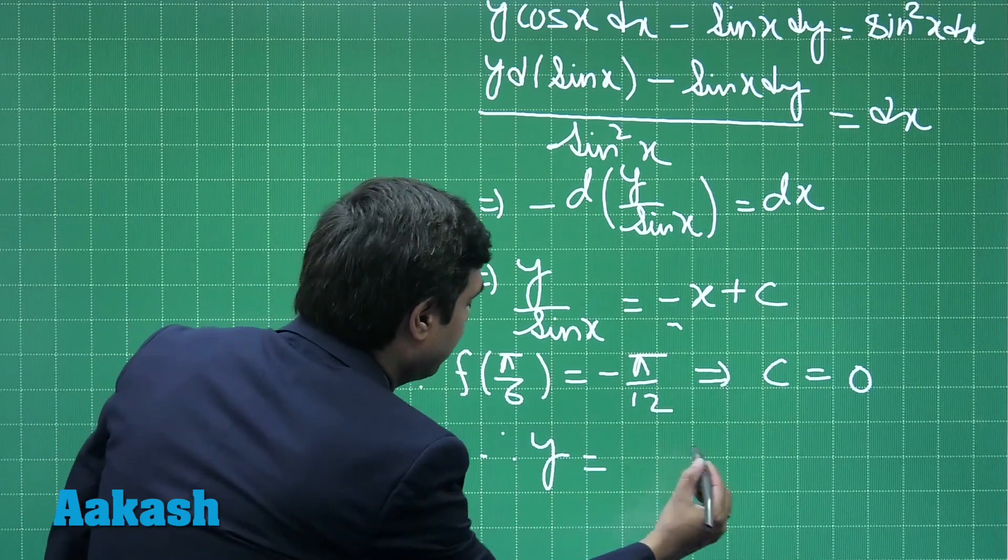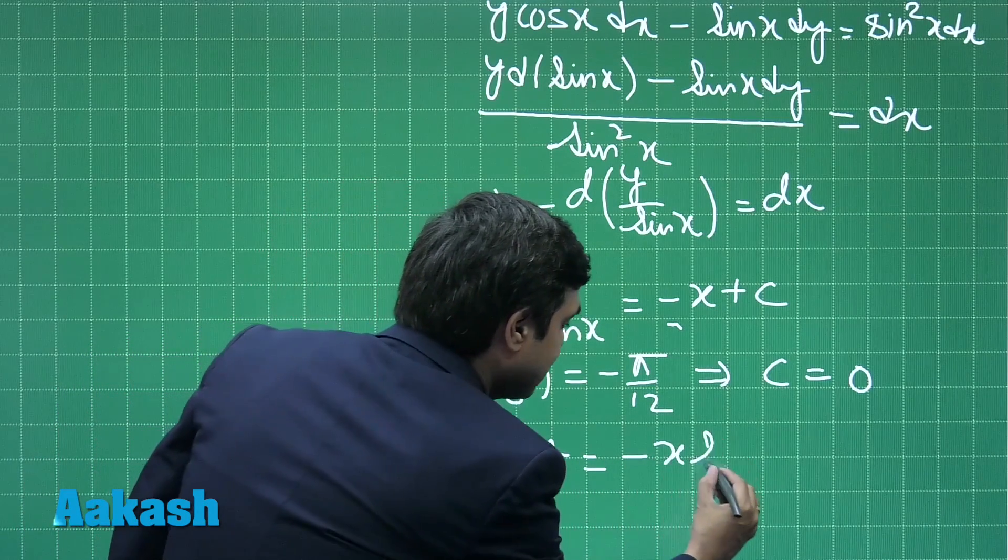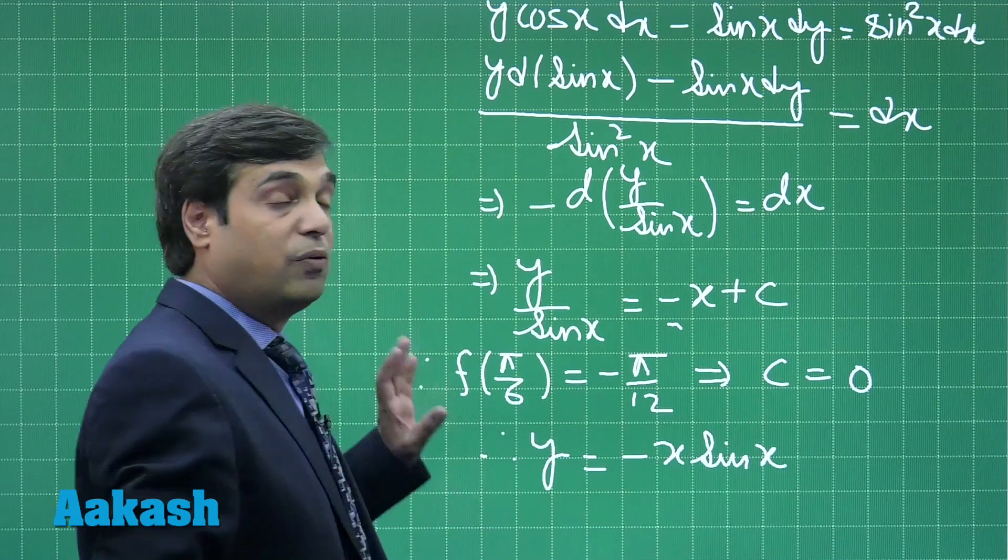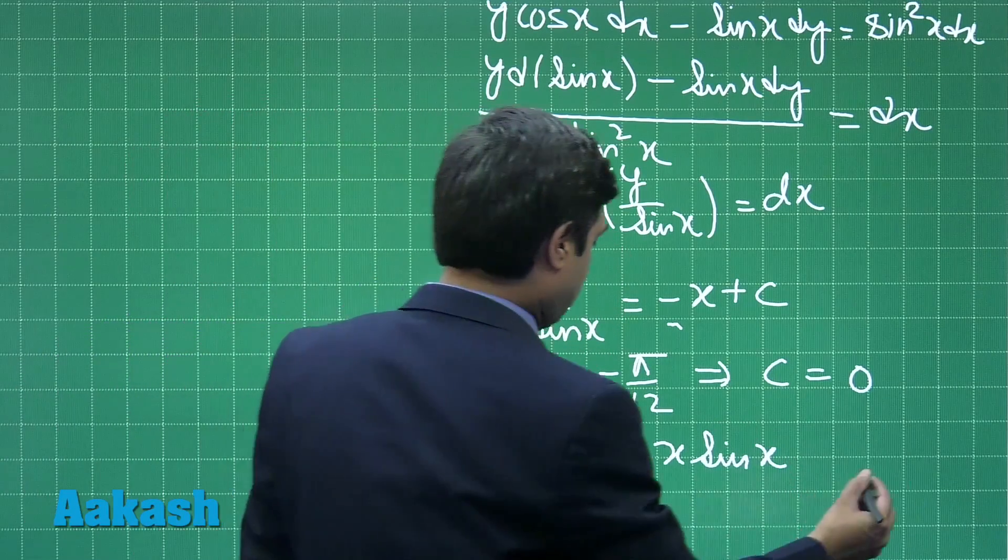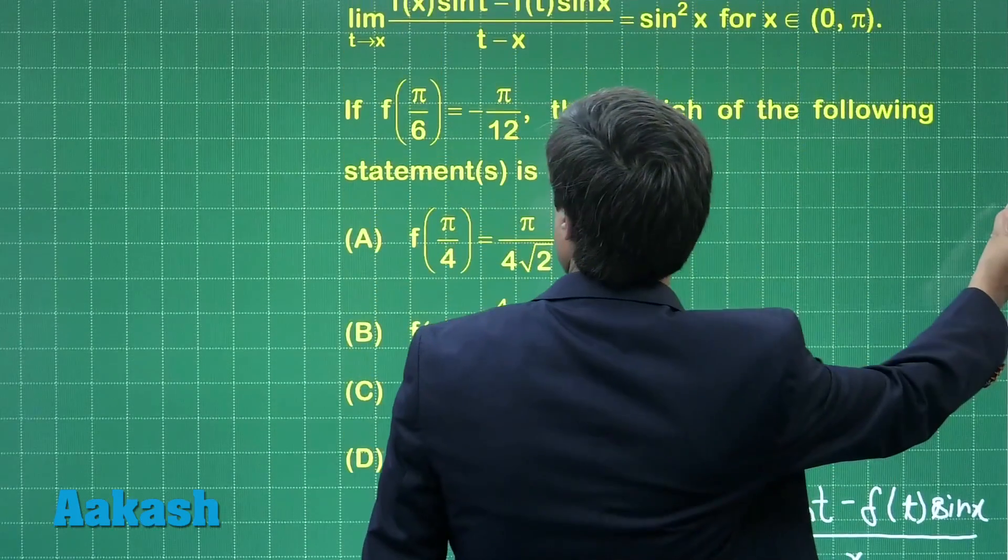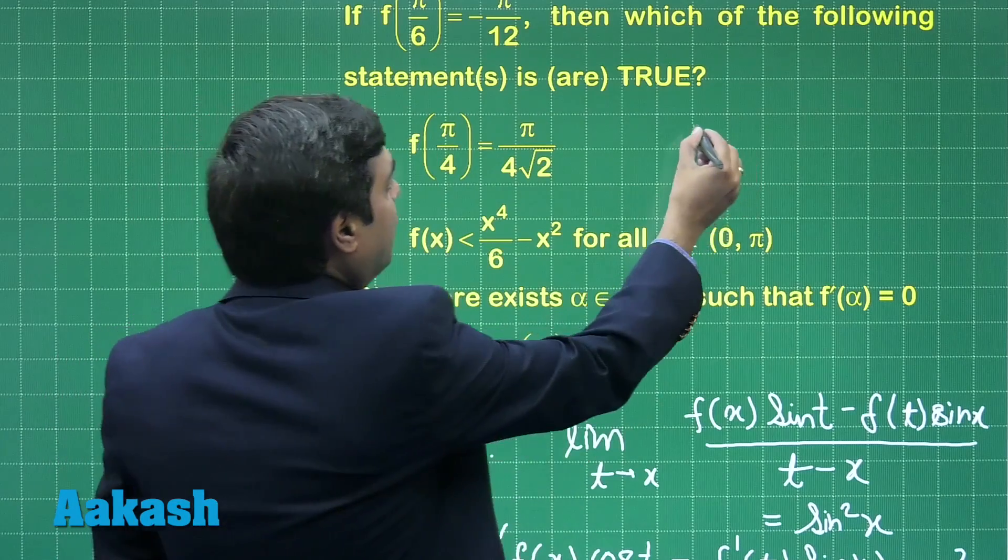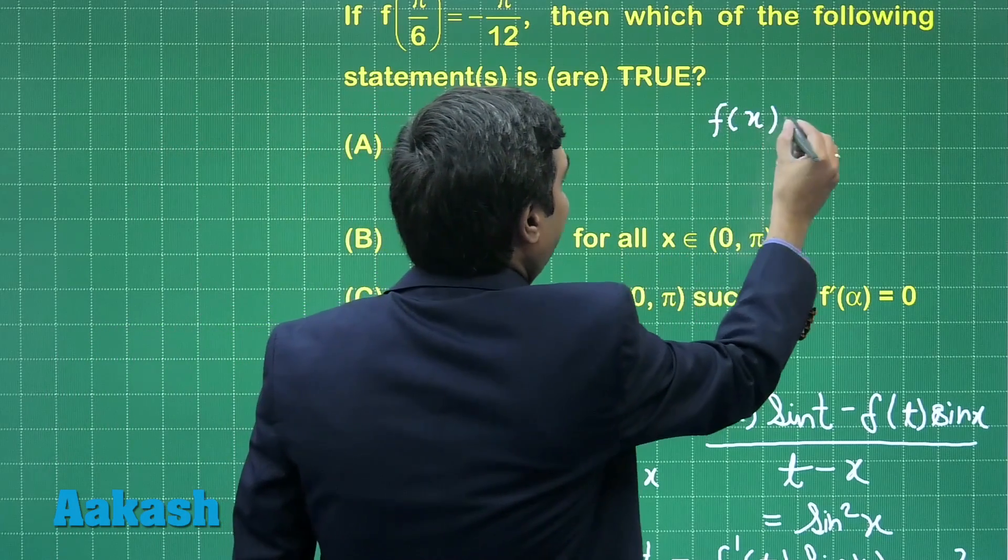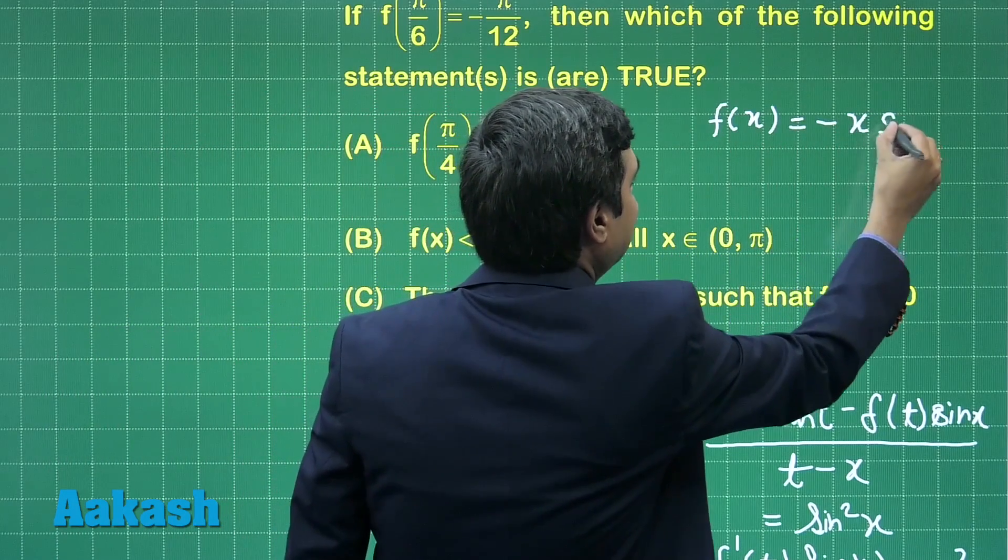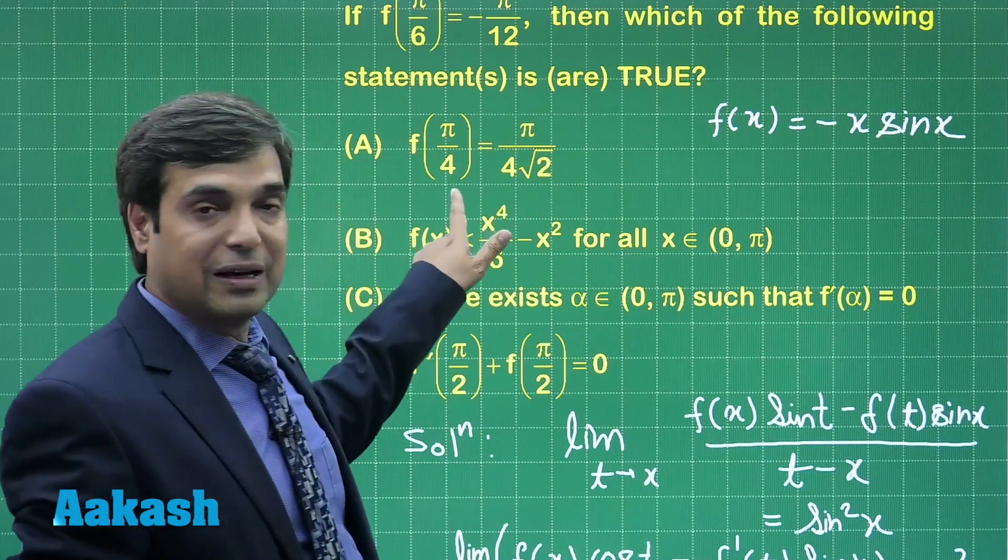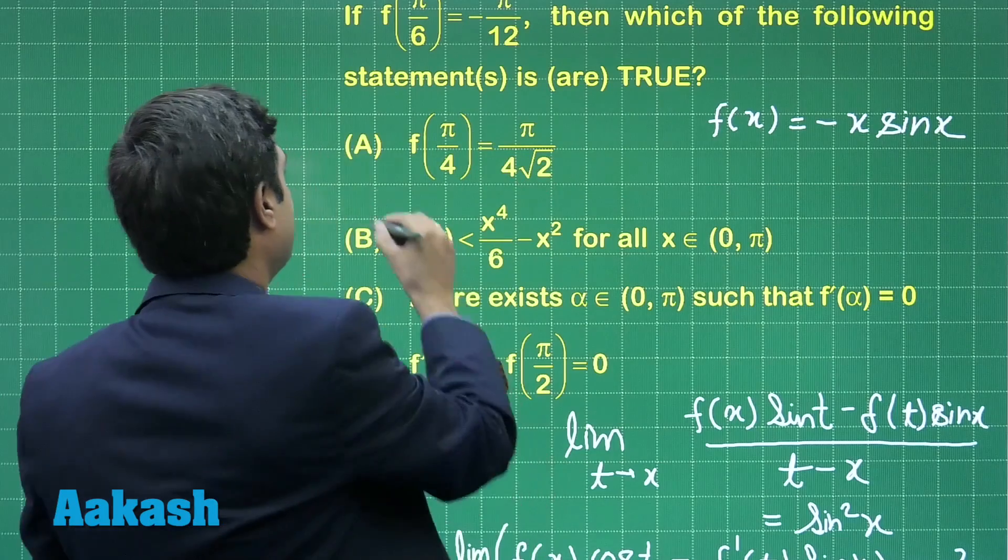Therefore, the function y is -x sin x. Now move to the options part. We obtain function f(x) as -x sin x. For x = π/4, clearly this value is positive, so it is not possible.